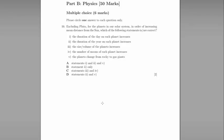Hello and welcome to this video walkthrough of the 2014 Oxford PAT exam, the physics section, brought to you by CowanPhysics.com. The physics section begins with question 10. Excluding Pluto, for the planets in our solar system, in order of increasing mean distance from the sun, which of the following statements is or are correct?